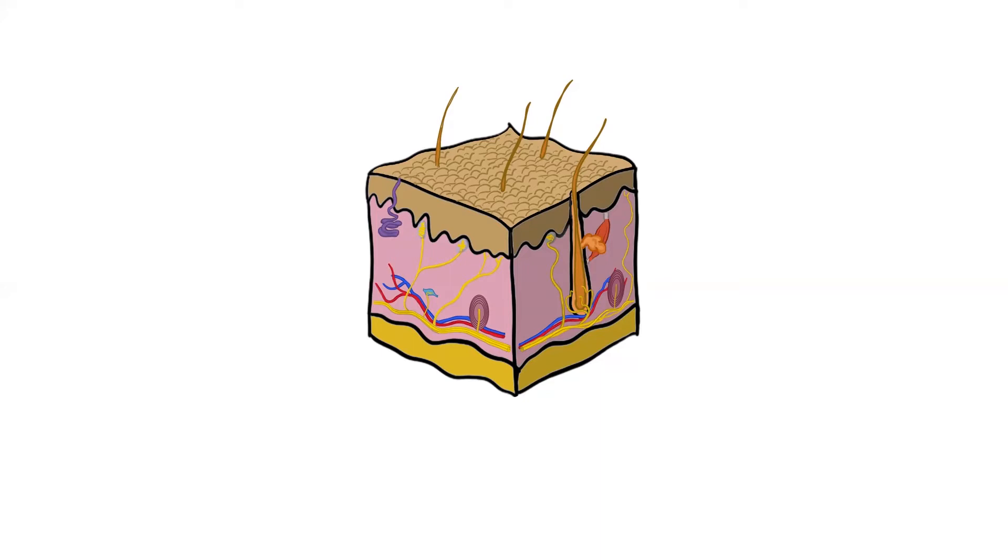Okay, so the first one I'm going to point out is the tactile corpuscle or Meissner corpuscle. If you see corpuscle in the name, it really indicates that it's encapsulated. With the tactile corpuscles, these are really more responsible for light touch.